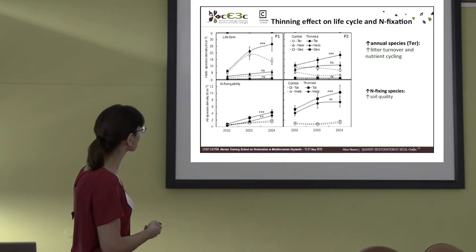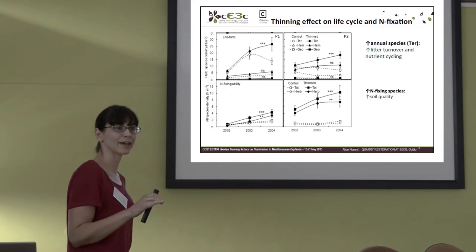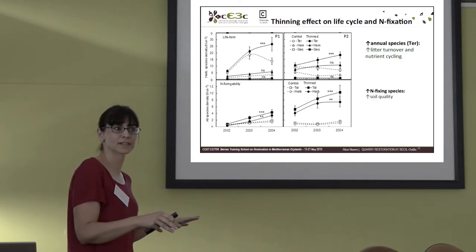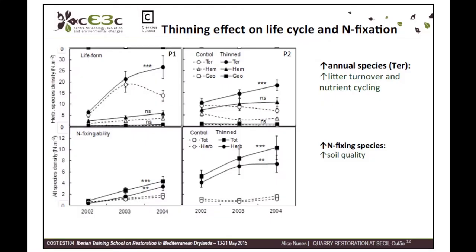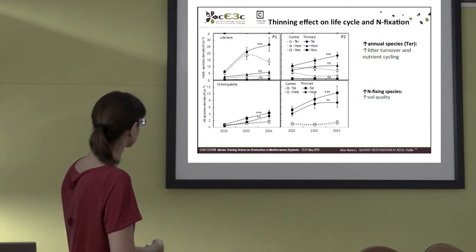Herbaceous species also increased significantly after thinning, mainly annual species. Only woody species were introduced through planting; no herbaceous species were actively placed there, so they are the result of spontaneous colonization. Annual species are important for litter turnover, because sclerophyllous species tend to immobilize nutrients, while annual species die every summer and contribute to soil formation. We also saw an increase in leguminous annual nitrogen-fixing species in response to thinning.